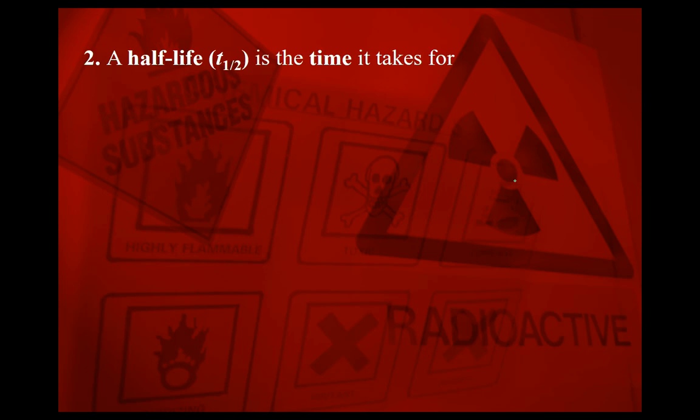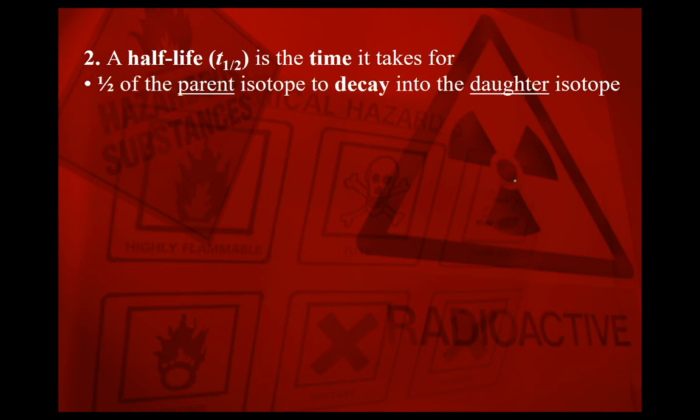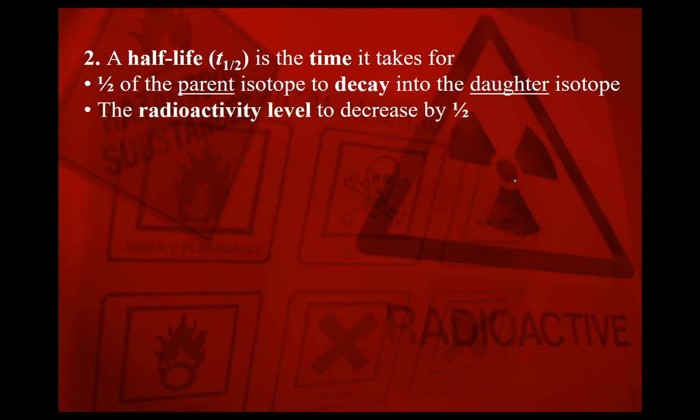A half-life, T½, is the time it takes for one half of the parent isotope to decay into the daughter isotope. If you want to look at this in terms of radioactivity — in becquerels — it's also the time it takes for your activity level to decrease by a factor of one half.